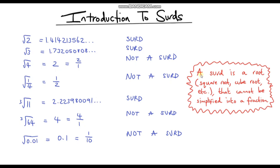So to summarise: a surd is a root — a square root, cube root, etc. — that cannot be simplified into a fraction. Hopefully this video was a nice gentle introduction to what a surd is. In the next video, we're going to do some arithmetic with surds, specifically multiplying and dividing surds. Thanks for watching — take care.